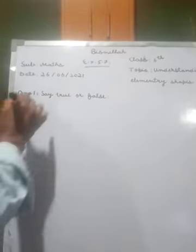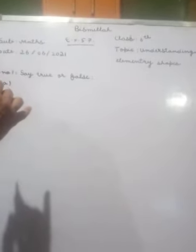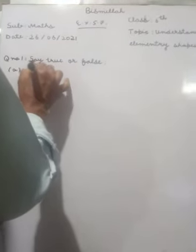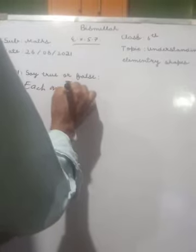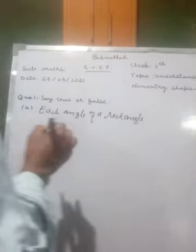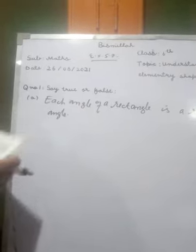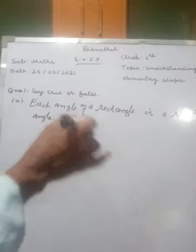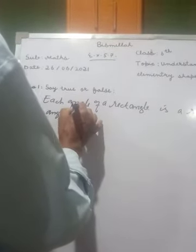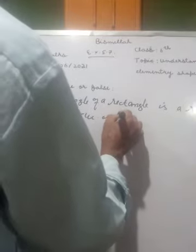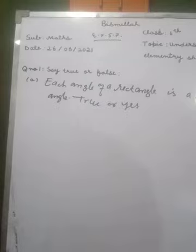Question number one, exercise number five point seven. Each angle of a rectangle is a right angle.